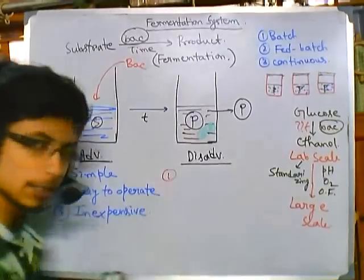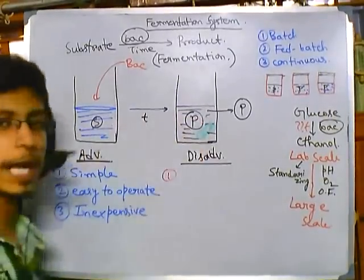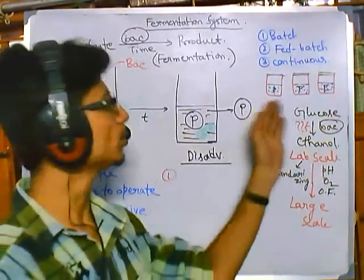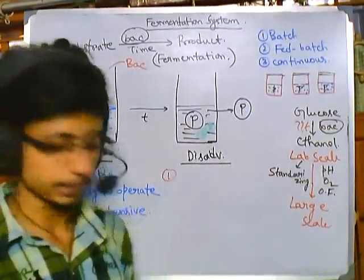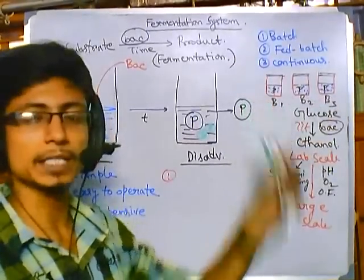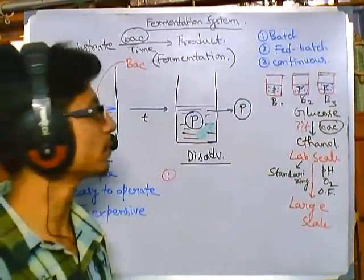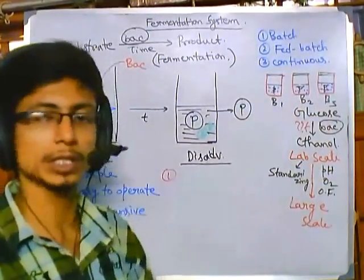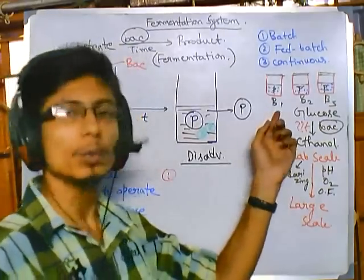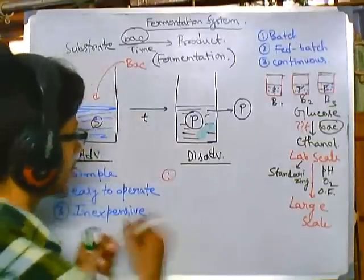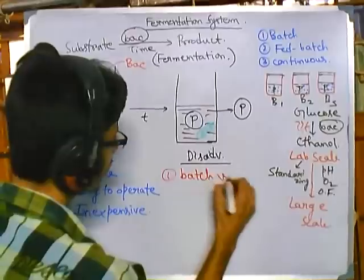The disadvantages of batch fermentation include batch variability. Suppose we have three different containers — batch one, batch two, and batch three — running at different times. The product from each batch can have variability. For example, in ethanol production, batch one, two, and three all produce ethanol, but the quantity and quality of ethanol from batch one will differ from batch two and three by certain amounts.